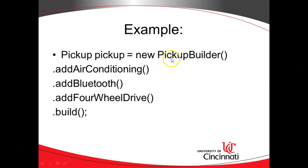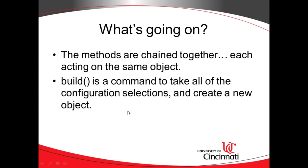So the Pickup Builder class has a method called Build whose return type is Pickup — not Pickup Builder, but Pickup. The Build method actually creates an object and stores it in the variable called Pickup. The methods are all chained together, and then Build is what takes that final configuration and creates the object.